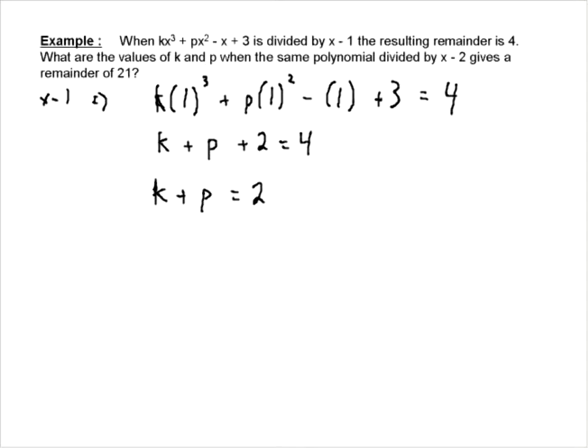So this equation is going to become k plus p plus 2 is equal to 4, so it's going to become k plus p equals 2. Now, we have two unknowns in a single equation. If we think back to linear systems and solving systems of equations, we need a second equation. And where is that second equation going to come from?